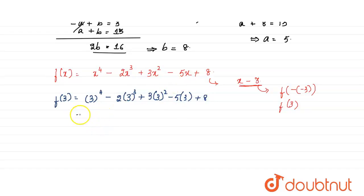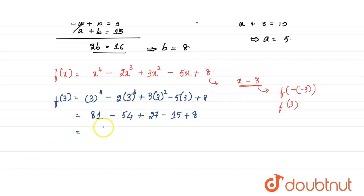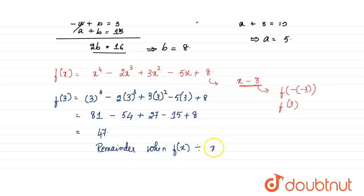Computing f(3): 3⁴ minus 2 times 3³ plus 3 times 3² minus 5 times 3 plus 8 equals 81 minus 54 plus 27 minus 15 plus 8, which equals 47. Therefore, the remainder when f(x) is divided by (x minus 3) is 47.